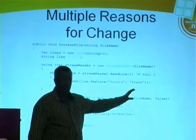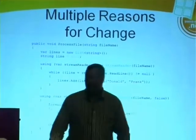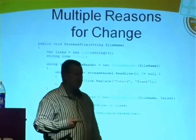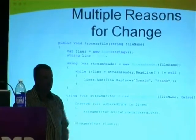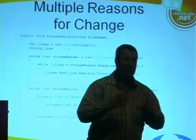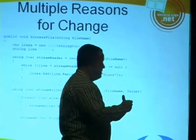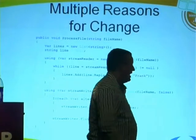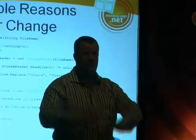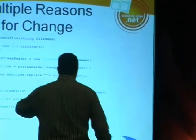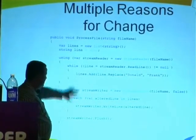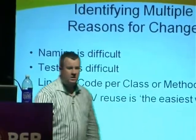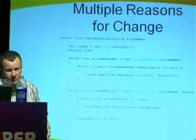The second reason to change is the Replace — if we wanted to change that so we were passing in the replacement value as a parameter, that's a second reason. Then we're persisting the data — maybe we want to change from the file system to a database. That's a third reason to change this class. The problem is everything is tightly coupled together: to change how we process a file, one change may affect everything else.